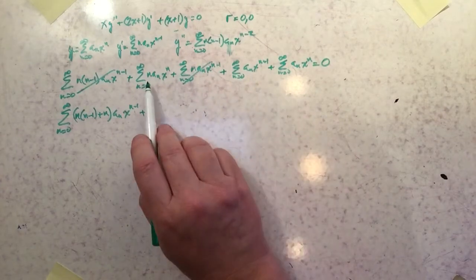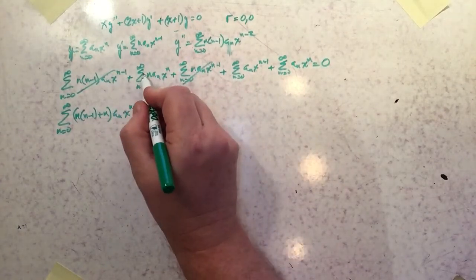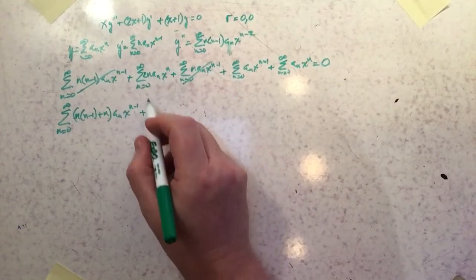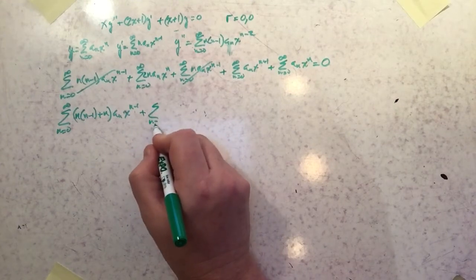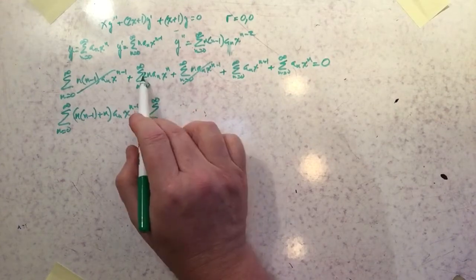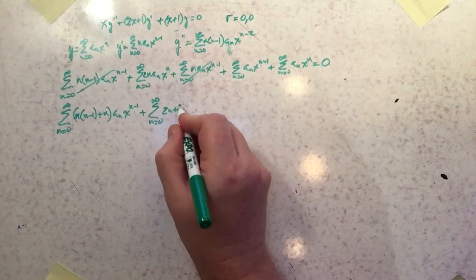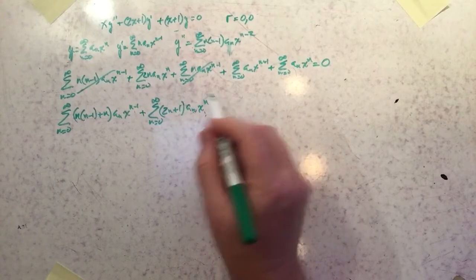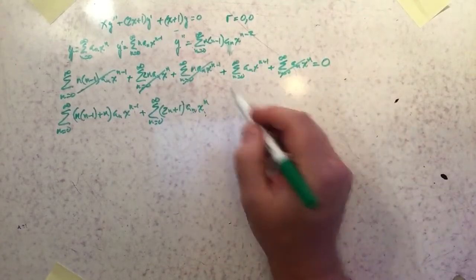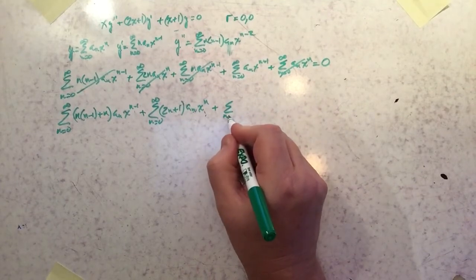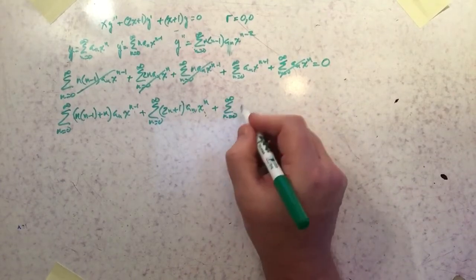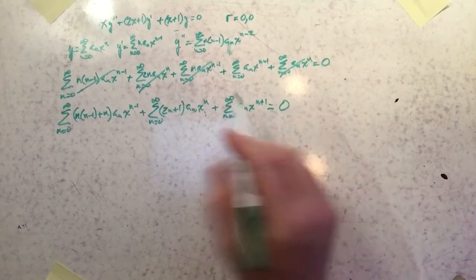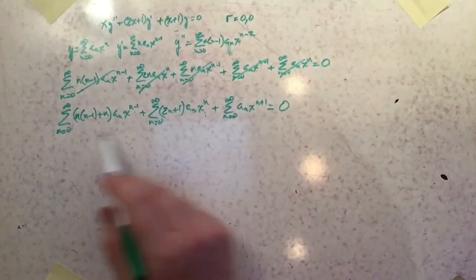Combining the x^(n−1) terms: Σ [n(n−1) + n]·aₙ·x^(n−1). Combining the x^n terms — remembering the coefficient was 2x, not just x — gives Σ (2n+1)·aₙ·xⁿ. And the remaining term is just Σ aₙ·x^(n+1) = 0. This trick significantly shortens the series from five terms down to three.